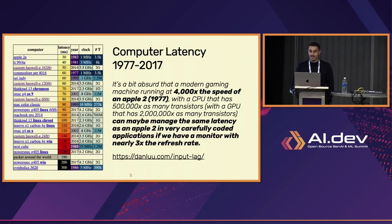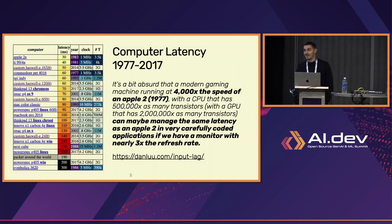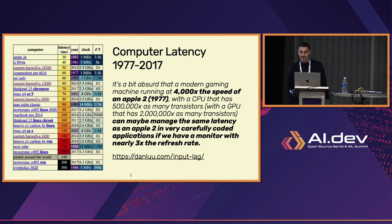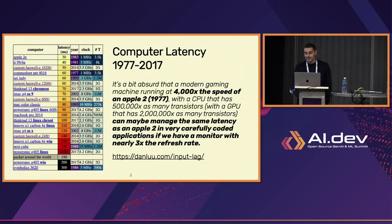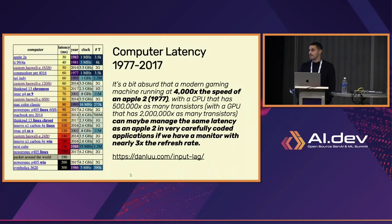While modern software still sucks — typing a character can take over 100 milliseconds. There's an amazing blog by Dan Liu showing how computer latency changed over the last 50 years, and the sneak peek is that it's not getting better. The amazing quote I love: it's a bit absurd that a modern gaming machine running at 4,000 times the speed of an Apple II from 1977, with 500,000 times as many transistors, can maybe manage the same latency in a very carefully coded application.